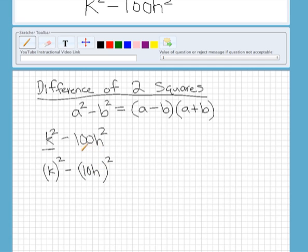you would get 100h squared here. So that means our k is what's being squared in the first term and then 10h is being squared in the second term.